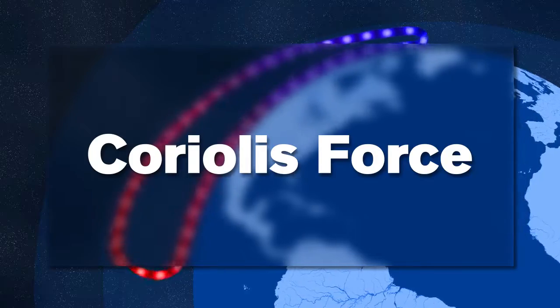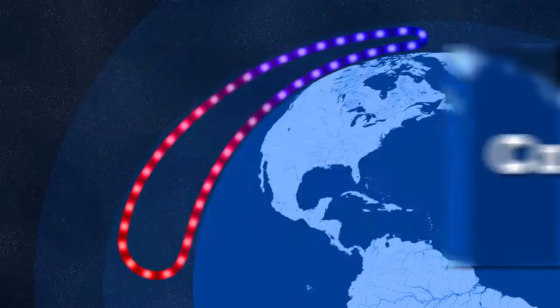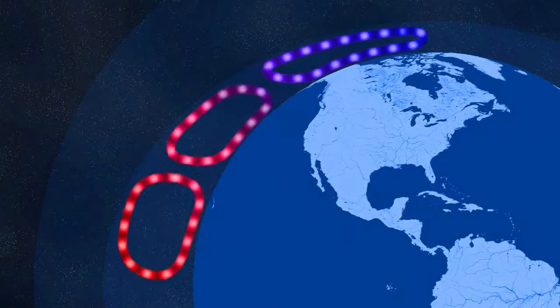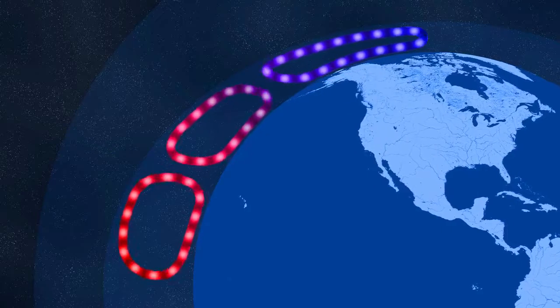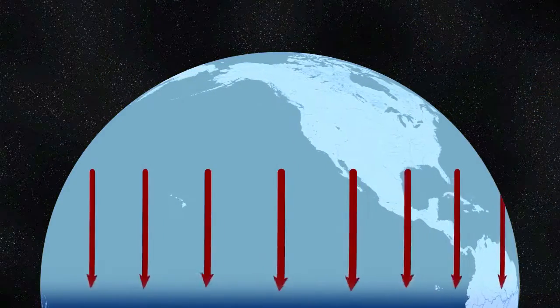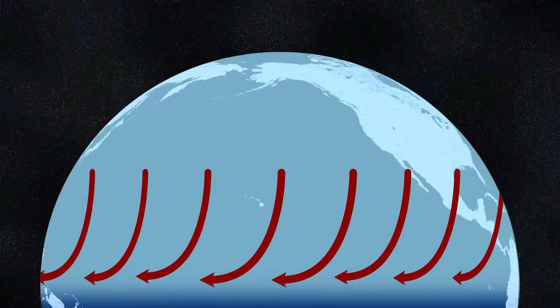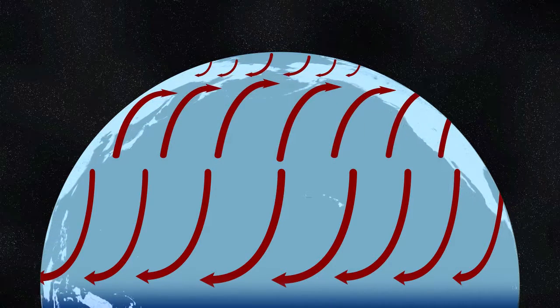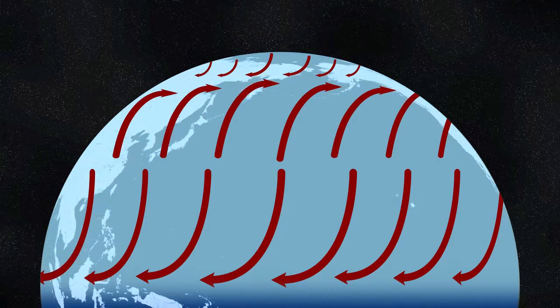The Coriolis force, a force created by the rotation of the Earth, causes the circulation of air to flow and break up into three distinct cells. In the northern hemisphere, the Coriolis force acts to turn the wind to the right. The circulation pattern is what gives rise to the westerly flow over much of the U.S.